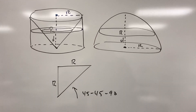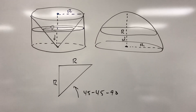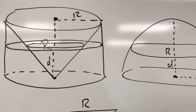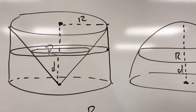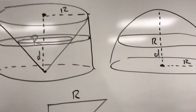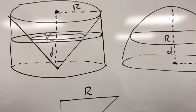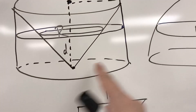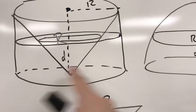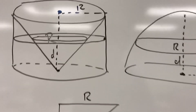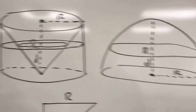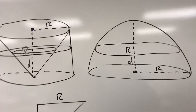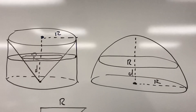The idea here is that you're going to use the volume of a cylinder with a cone that has the same height and the same base as the cylinder. What we're actually going to show is that the volume of the solid remaining after you take out the cone is the same as the volume of the hemisphere. This is going to use Cavalieri's principle.